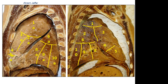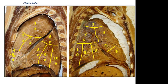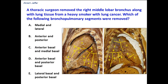The segments of the lower lobe on the left lung are exactly the same as the segments of the lower lobe on the right lung: apical basal, anterior basal, posterior basal, medial basal, and lateral basal.